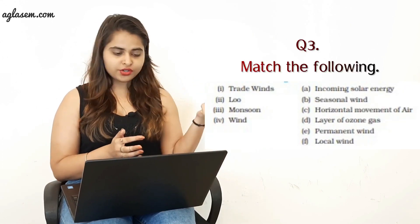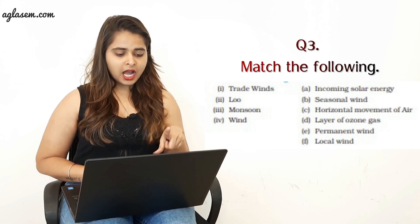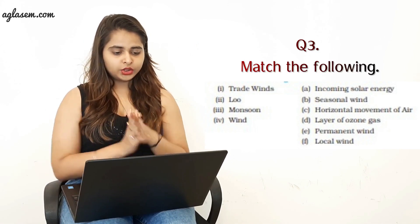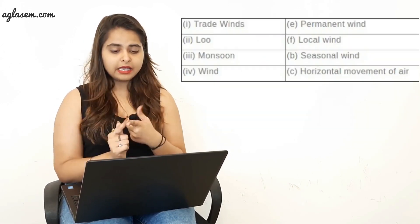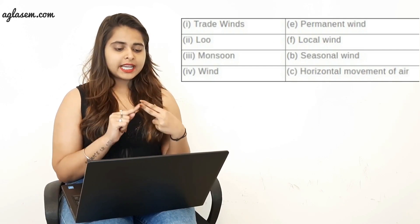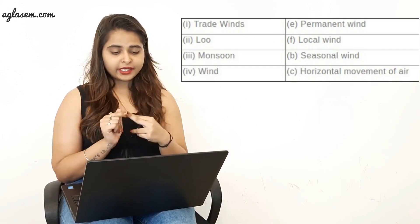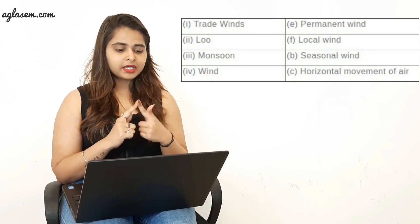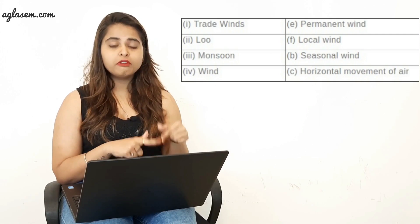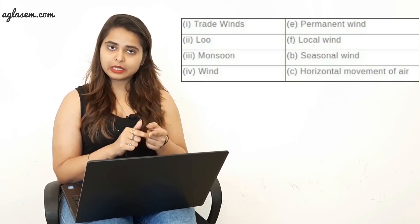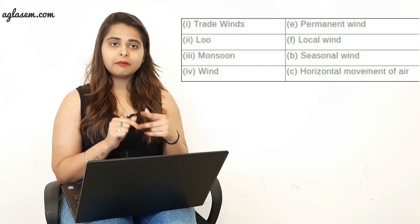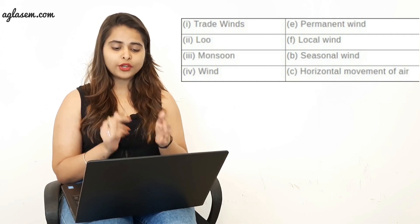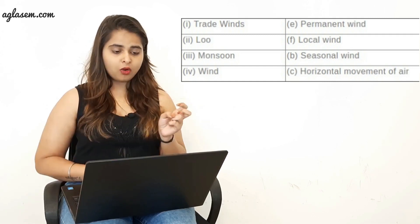Now, third question: Match the following. You can see the question on screen. The answers are: trade wind connects to E — permanent wind; loo connects to F — local wind; monsoon connects to B — seasonal wind; fast wind connects to horizontal movement of air.